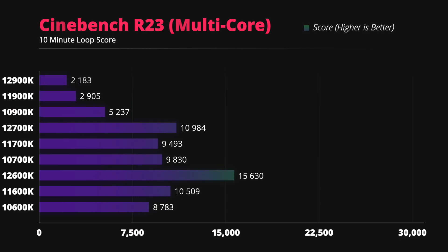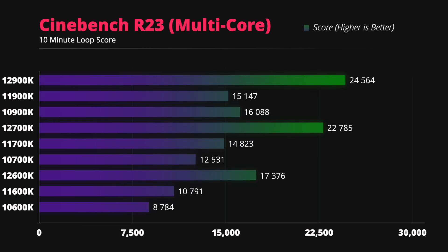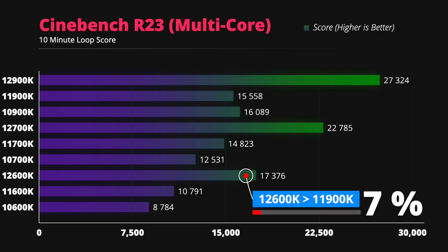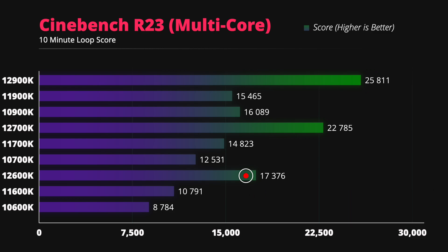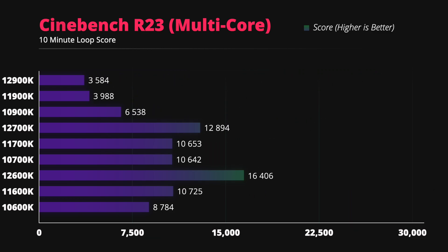The Cinebench multi-core test reveals just how much better the new CPUs are. The 12900K is almost two times better than the 11900K, and the i5-12600K puts the 11900K to shame by scoring 12% higher in multi-core.